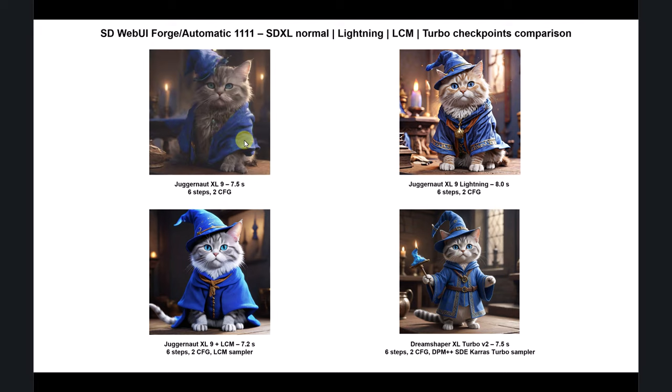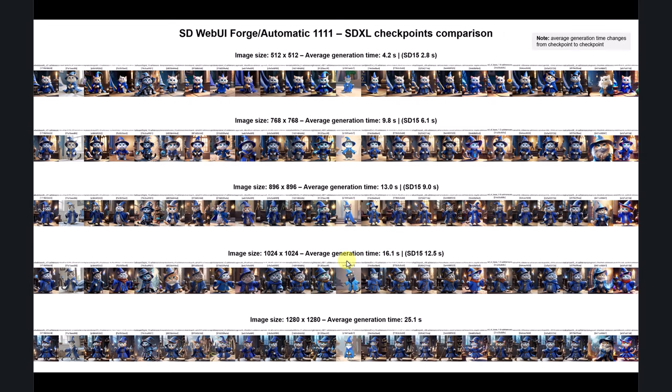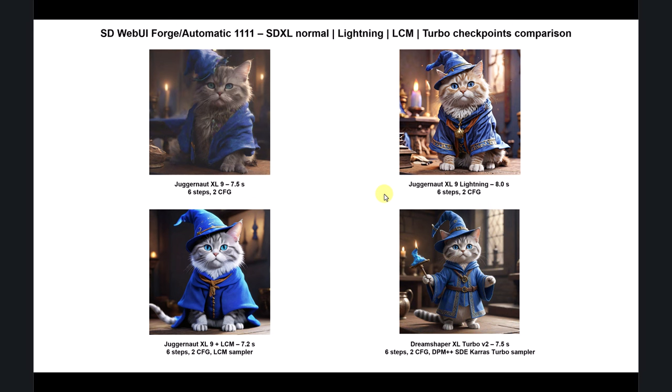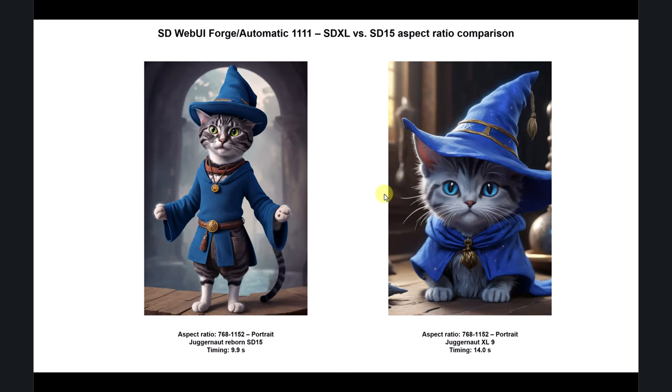Use these accelerated models when you want to play with prompts or need to generate many images for experiments — I used Lighting and LCN for that. Aspect ratios are also very important and the same principles apply for both SD 1.5 and XL. The sweet spot resolution between the two models is around 1024. You need to find your sweet spot.